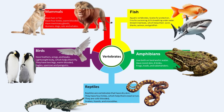Mammals have hair or fur on their bodies. This hair or fur helps them keep warm by providing insulation. They have full limbs which help them walk, run or swim. They are warm-blooded, which means they can generate their own body heat. They have mammary glands which produce milk to feed their young. Some examples of mammals are humans, dogs, cats and whales.